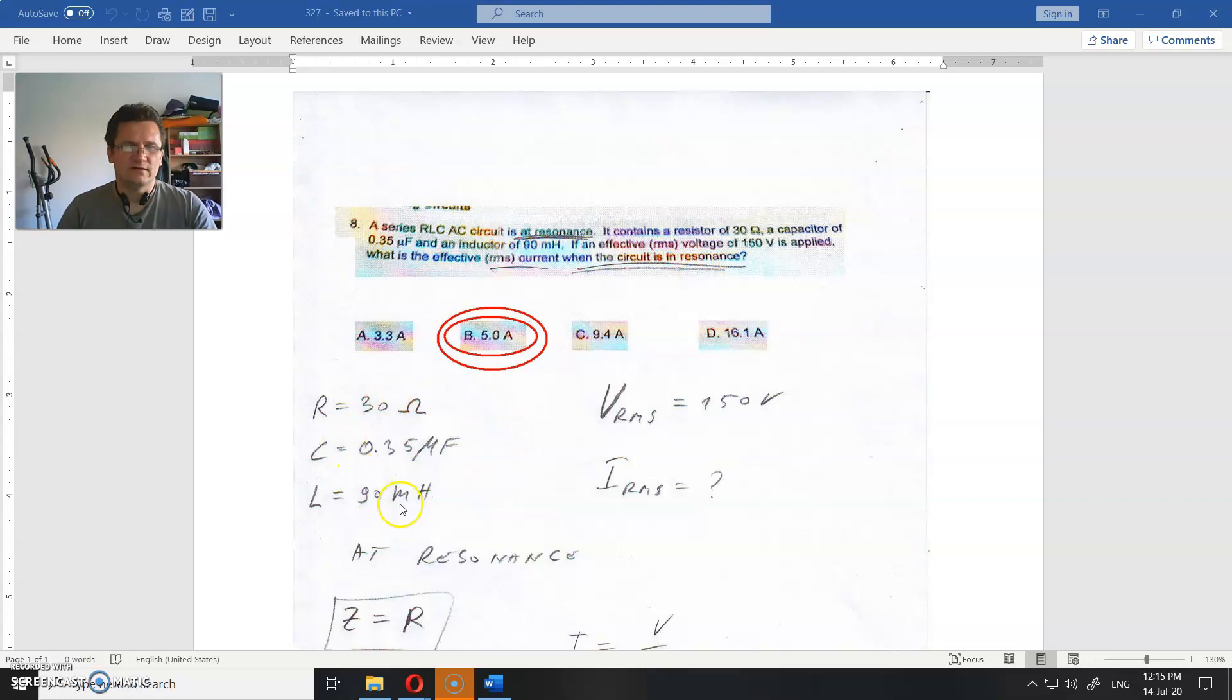So these are the data: this is resistance, this is capacitance, this is inductance, and voltage is 150 volts. What is the current?